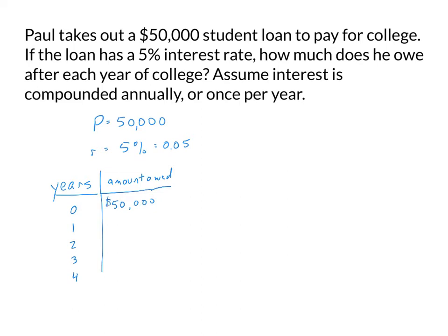To go from year 0 to year 1, we compute the 5% interest that accrues over the course of that year by taking $50,000 and multiplying by 0.05. That gives us $2,500 in interest that gets added on to the loan at the end of the year. So $50,000 plus $2,500 equals $52,500. At the end of our first year of college, we owe $52,500.